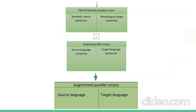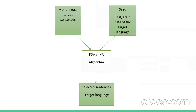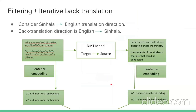In data selection, the training data in the source language is translated to the target language, and those translated sentences are used as a seed set. Monolingual sentences in the target language are then fed to the INR and FDA algorithms. If a sentence's score exceeds a certain threshold, it is selected for the augmented corpus.